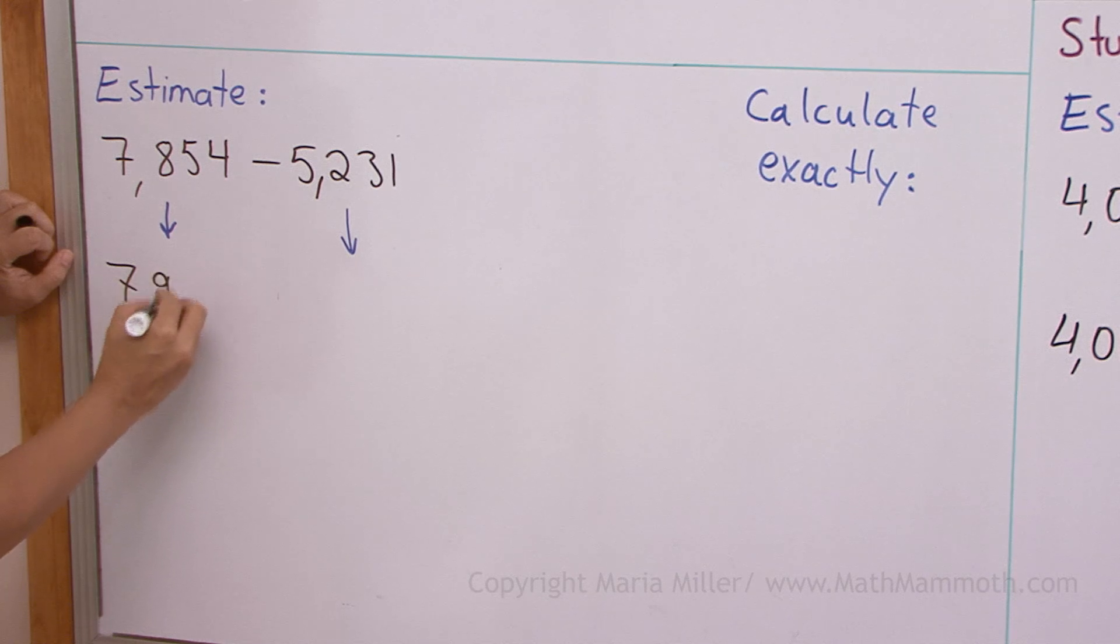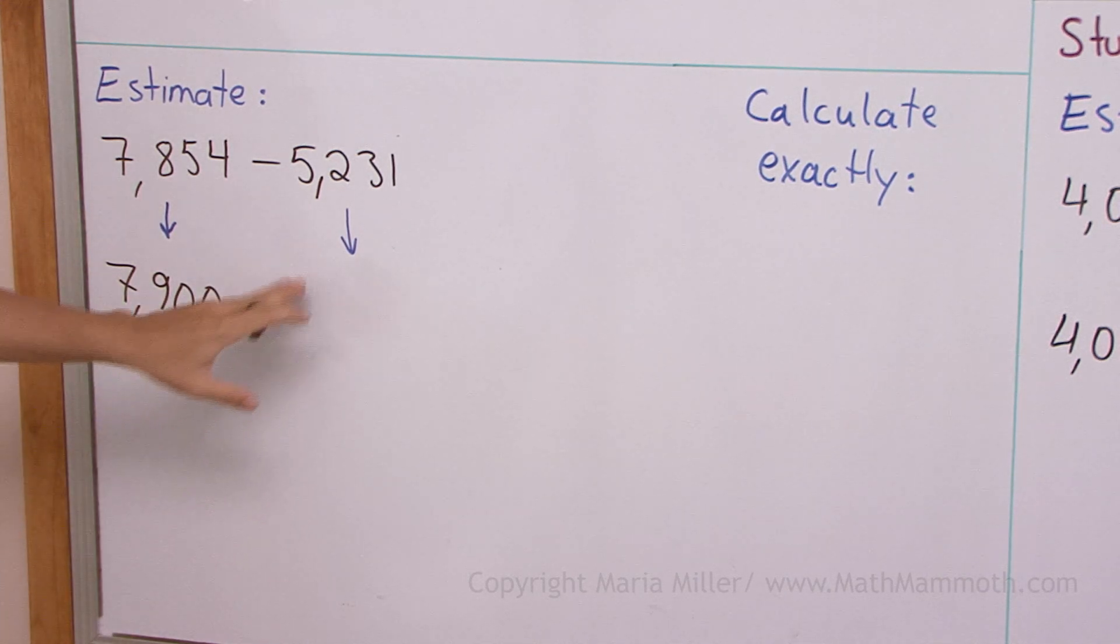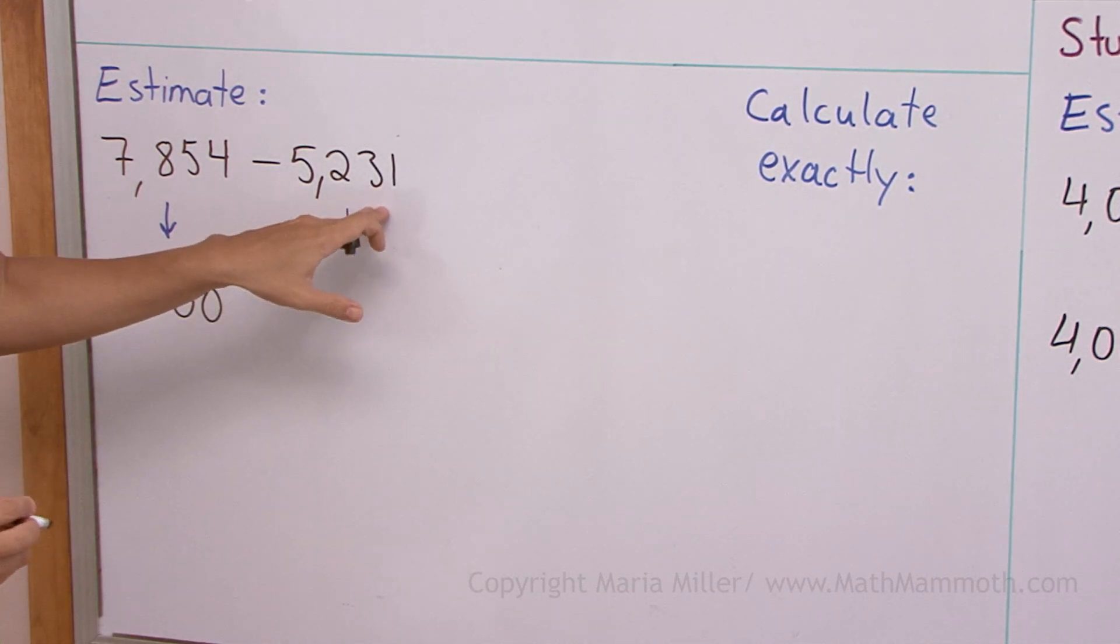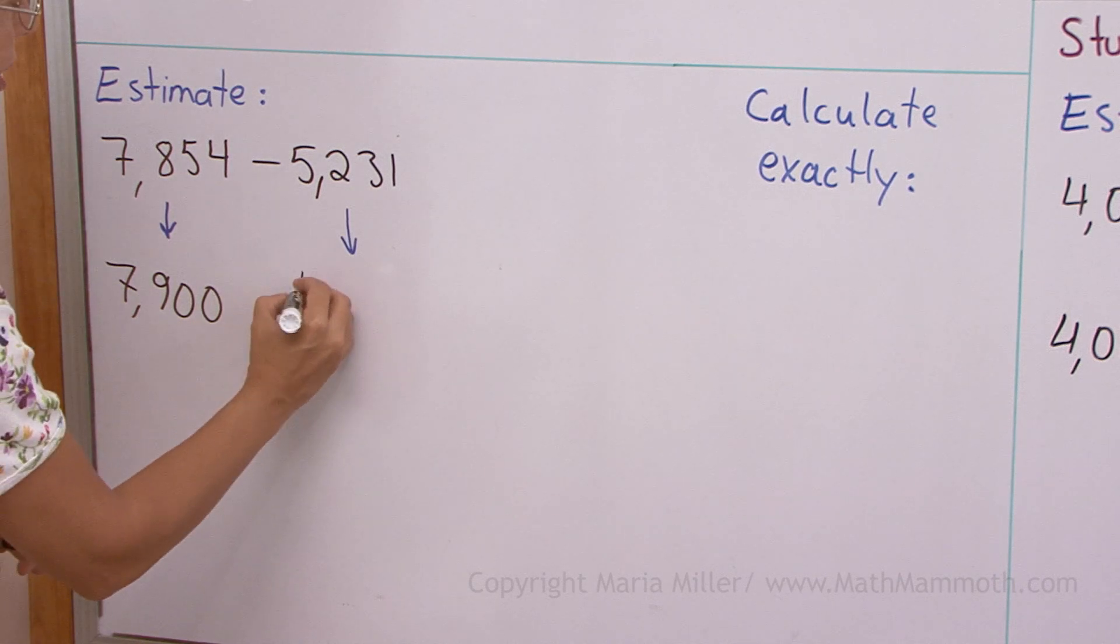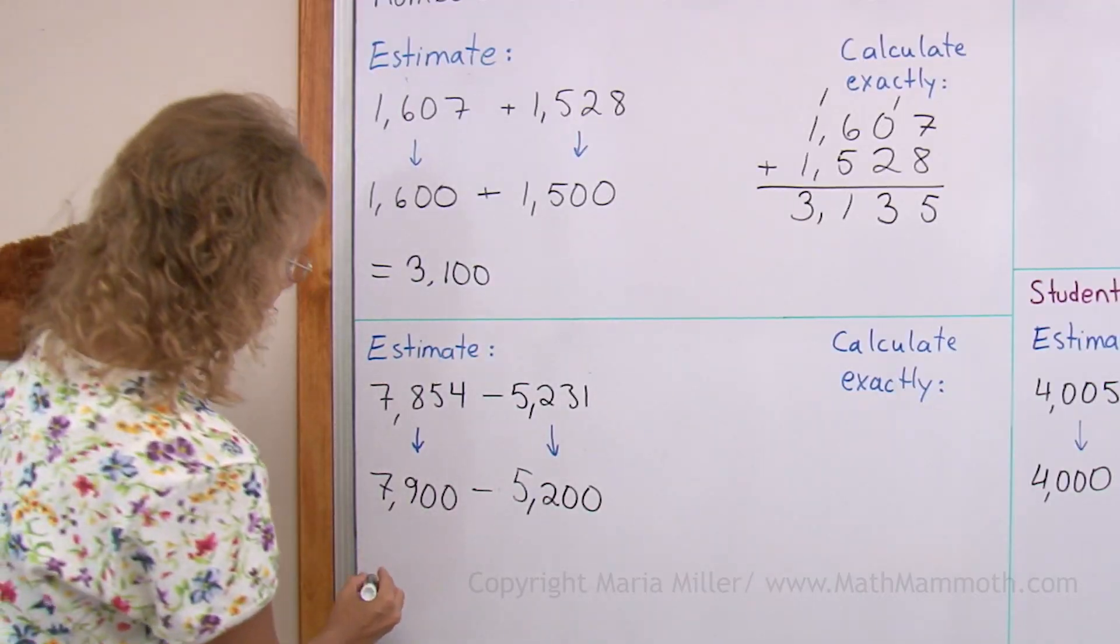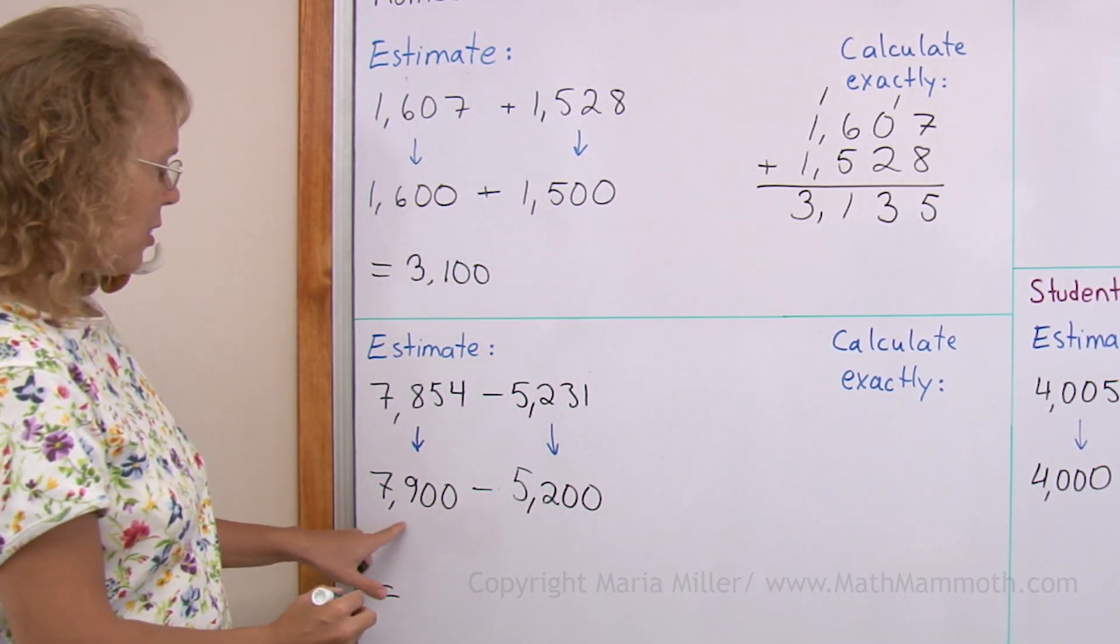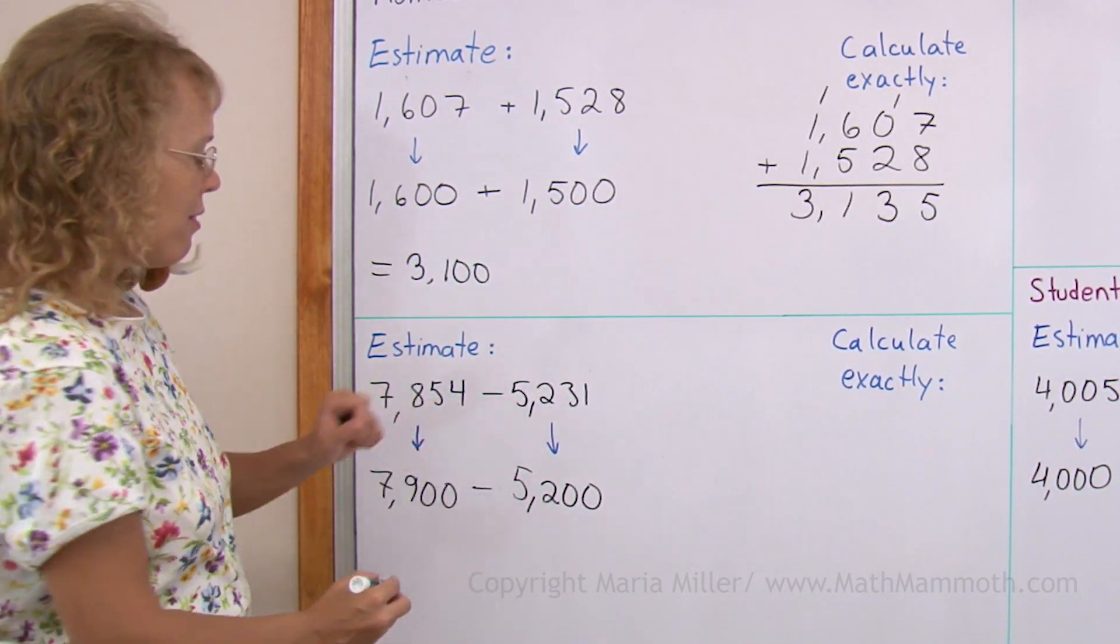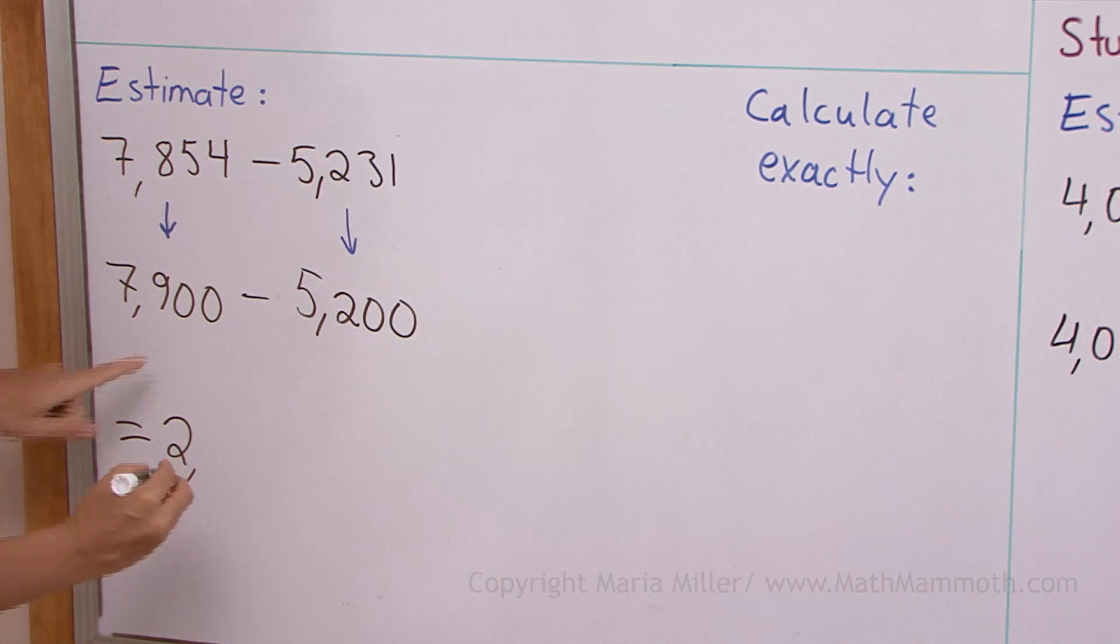This one, 30, 31 here, means we round it down, like that. And now I will subtract the 7,900, so 7 minus 5 here would be 2,900 minus 200, 700.